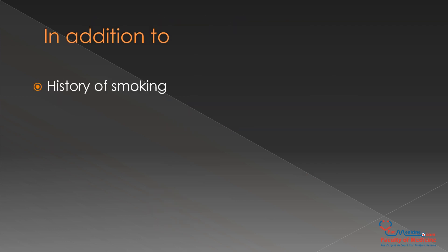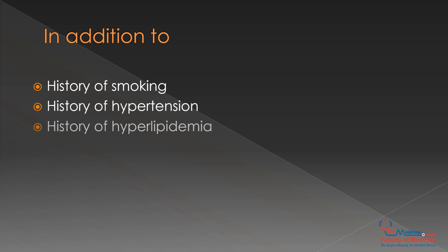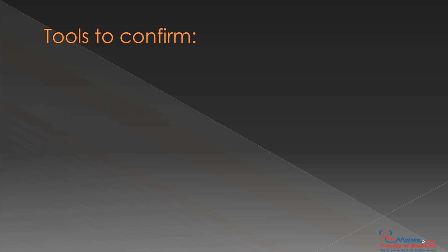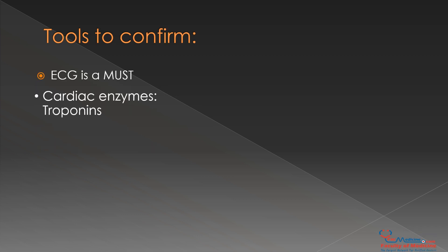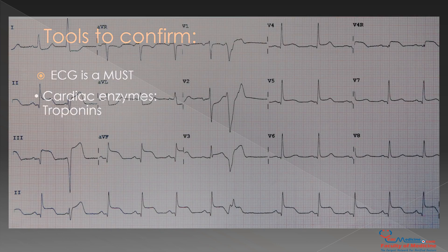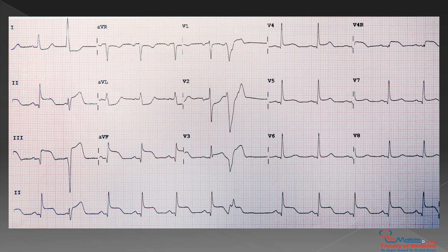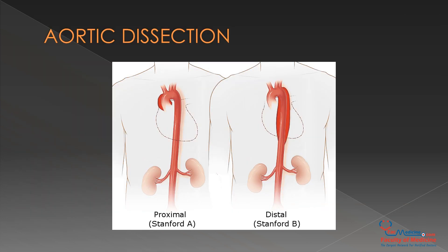In addition to history of the pain, we need to ask about the history of smoking, hypertension, hyperlipidemia, and diabetes. Tools to confirm: ECG is a must, and cardiac enzymes such as troponin. In this ECG, we can see ST segment elevation, which is the hallmark of diagnosis of myocardial infarction, in leads 2, 3, and AVF.